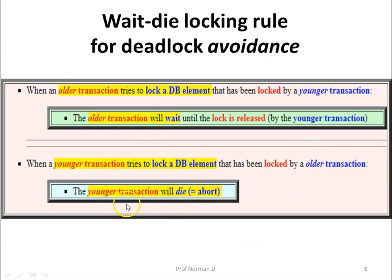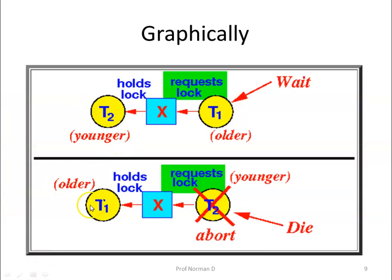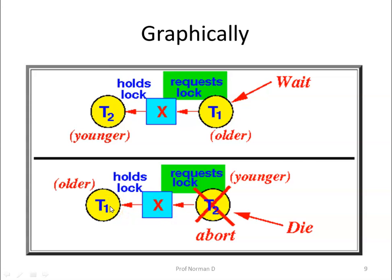Looking at the diagram: we have transaction T1 (the older transaction) and T2 (the younger transaction). T1 is requesting a lock on data item X which is held by T2. Since T1 is the older transaction, it will be made to wait. In the second case, T2 is the younger transaction requesting a lock on data item X held by the older transaction. In this case, the younger transaction T2 will be aborted. This is how the Wait-Die protocol works.